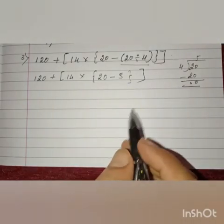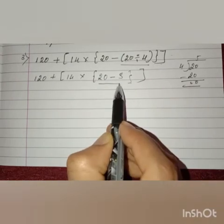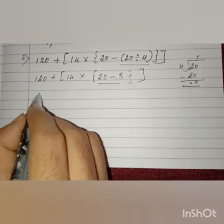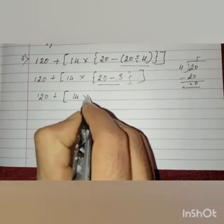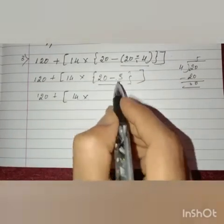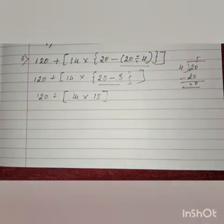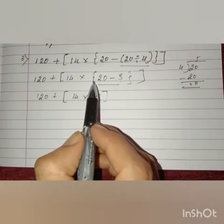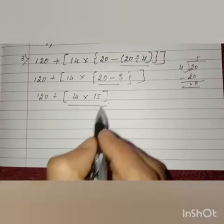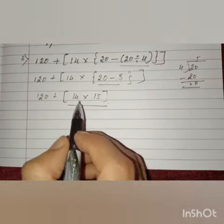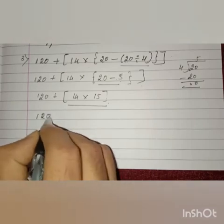After removing the common bracket, we remove the curly bracket. Here they have given subtraction: 20 minus 5 is 15. Big bracket close. After removing the curly bracket, we have to remove the big bracket. The operation given in the bracket is multiplication. Remaining as it is: 120 plus, and we multiply 14 into 15.